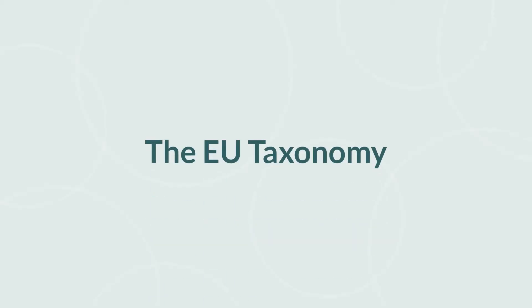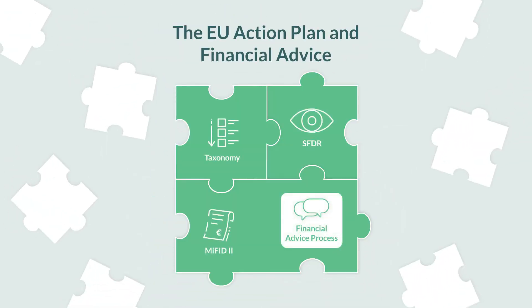The EU Taxonomy is considered the core of the EU Action Plan. It defines environmentally sustainable economic activities by establishing a uniform classification system.